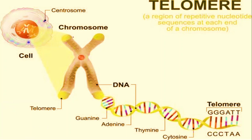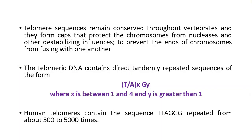Here is the structure of a telomere. You can see a chromosome present in the nucleus of the cell. The end region of the chromosome consists of telomere, which contains repetitive nucleotide sequences at each end. Telomere sequences are conserved throughout vertebrates and form a cap-like structure to protect the chromosome from nuclease activity and other destabilizing influences, and to prevent the ends of chromosomes from fusing with one another.